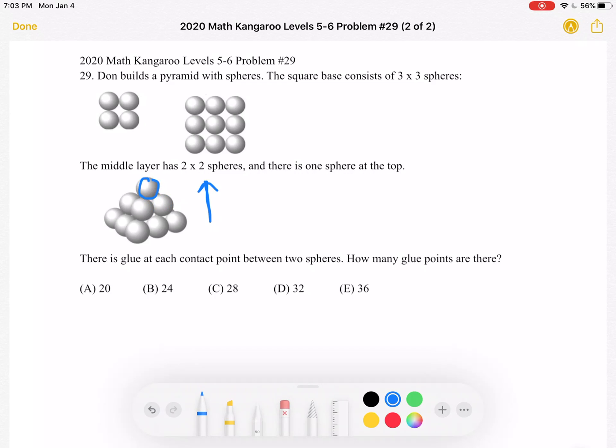So as we can see, this top sphere is touching the four spheres below it in the second level. So each sphere has four contact points with the spheres below it.